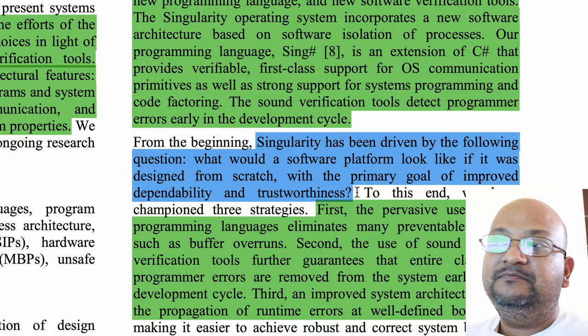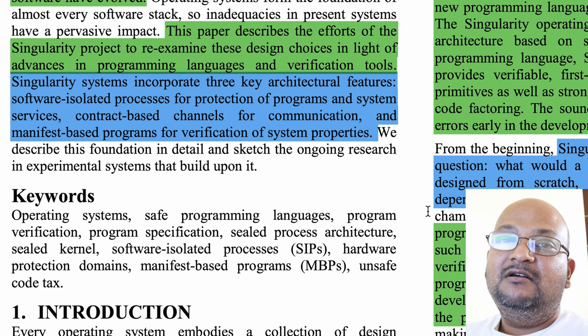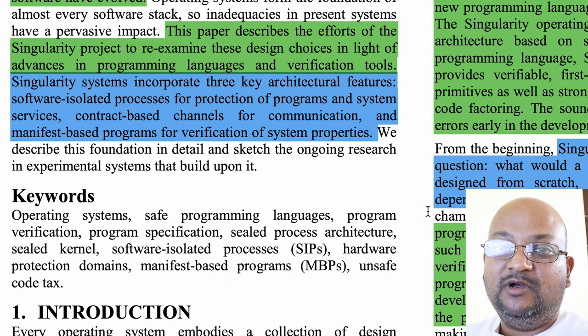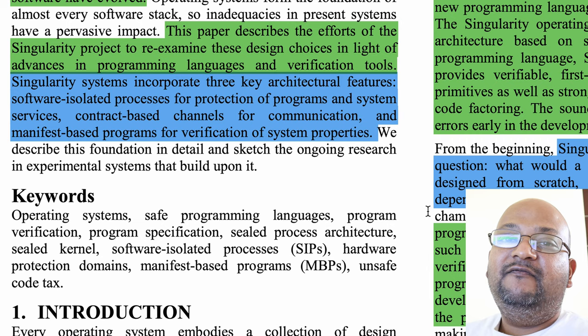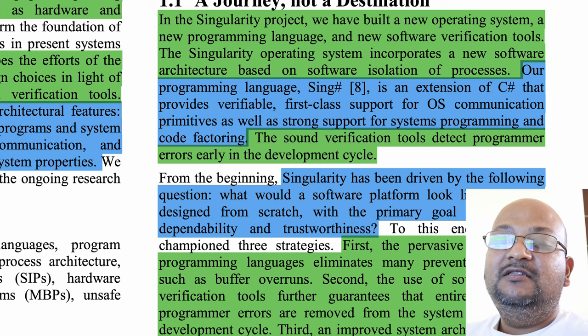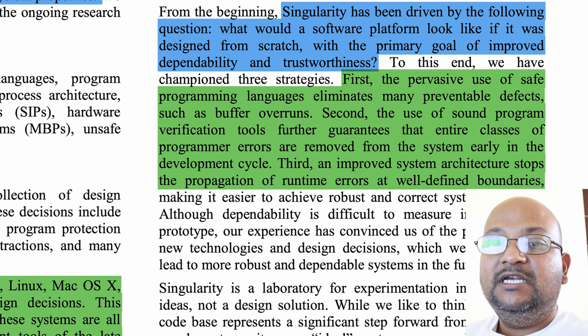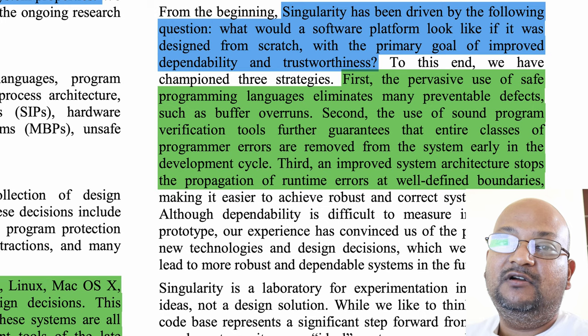They explore this design space with three key new features. One is using processes that are isolated by software rather than hardware, using only channels for communication, and verifying the properties of the programs that this OS runs. The first thing to know about Singularity is that it is written in a type-safe language — an extension of C# called Sing#. Using a type-safe language right away eliminates a huge class of errors like buffer overruns that were prevalent in operating systems written in C.